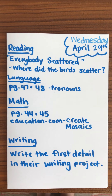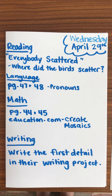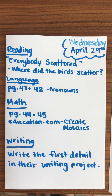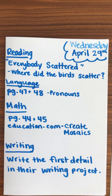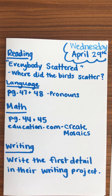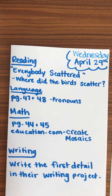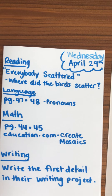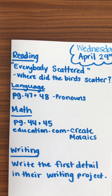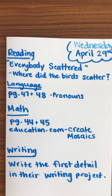Good morning! Today is Wednesday, April 29th, and today we are reading the book Everybody Scattered on willbooks.com. Your child will definitely notice a pattern in this book — an animal or someone is scattering on each page. So if they don't understand what the word scattered means,